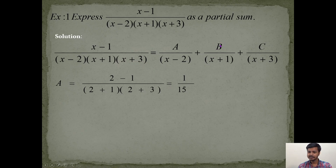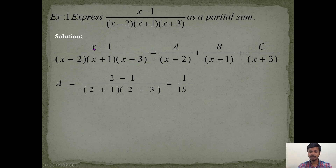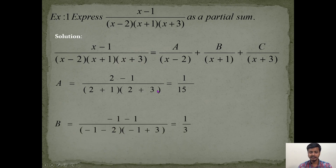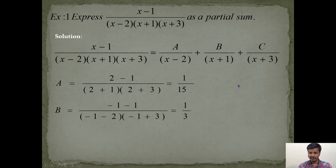On similar lines, to find B: the factor is (x + 1), so x = −1. Put x = −1 in the left-hand side covering the (x + 1) term: (−1 − 1) / [(−1 − 2)(−1 + 3)], which gives B = 1/3.